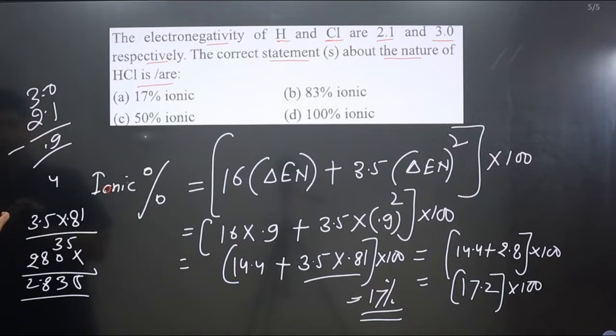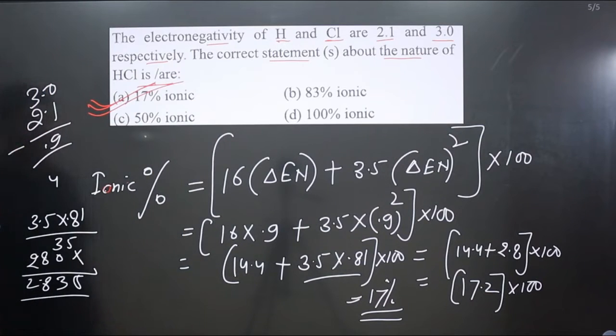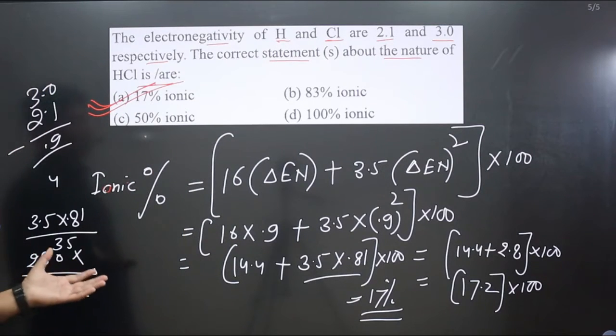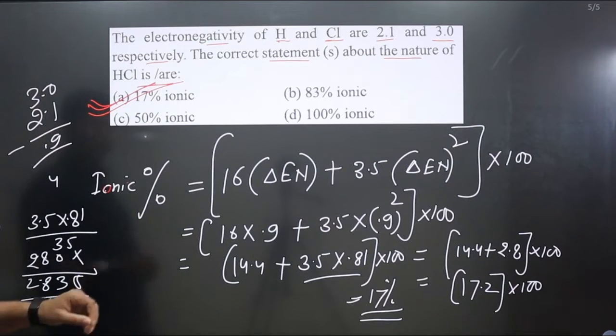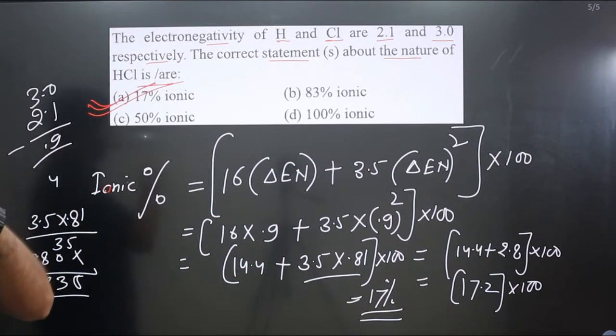We applied the ionic character formula and calculated the ionic percentage. When we calculated, we got 17 percent, so that option is correct. If you like this video, please share and subscribe to the channel.